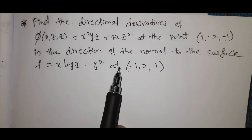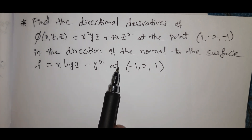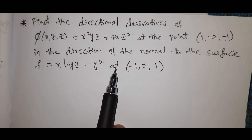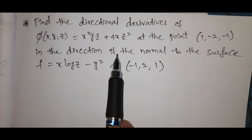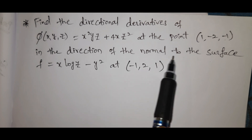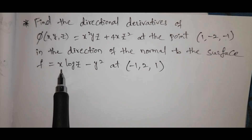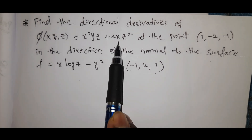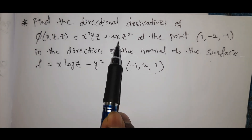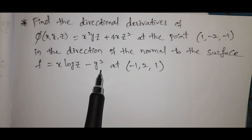This is a directional derivative problem. In the direction of the normal to the surface f = x·log(z) - y², we use the unit normal vector. The directional derivative equals ∇φ dot the unit normal vector.